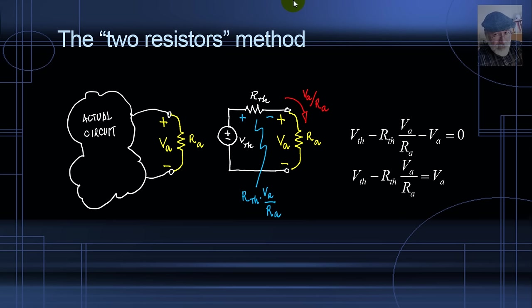We can rewrite the equation this way, where we have moved the known term V_A to the right. In that equation, we know R_A, of course we chose it. We know V_A, we measured that in the lab. And we have two unknowns, V_TH and R_TH. So we have one equation, two unknowns.